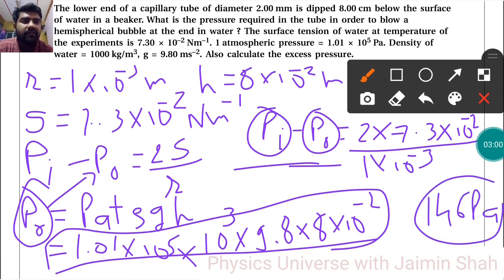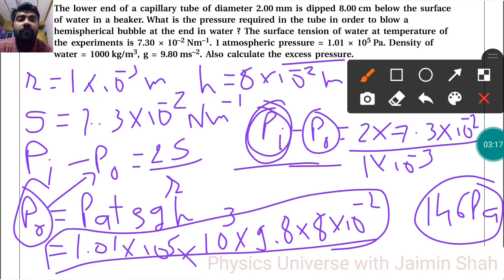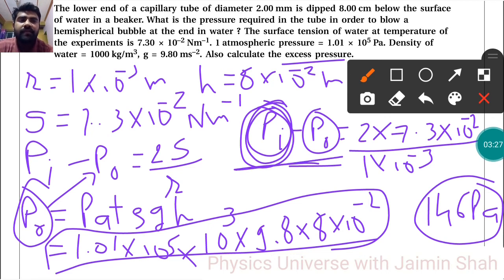Our final answer: excess pressure is 146 Pascal. The earlier question asks for the pressure required in the tube to blow a hemispherical bubble, which is Pᵢ, since that is the pressure from inside. The excess pressure is the change Pᵢ minus P₀, which equals 146 Pascal.